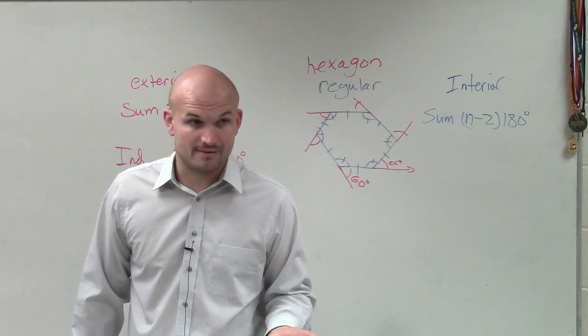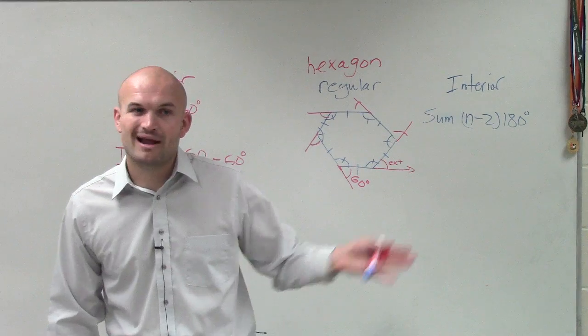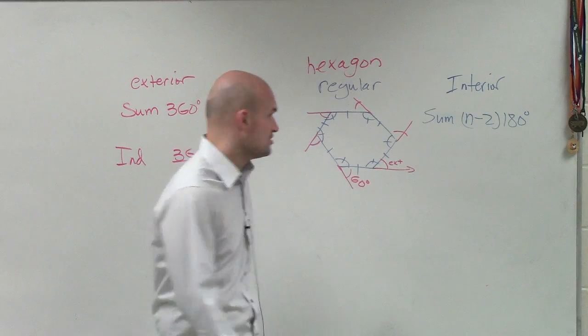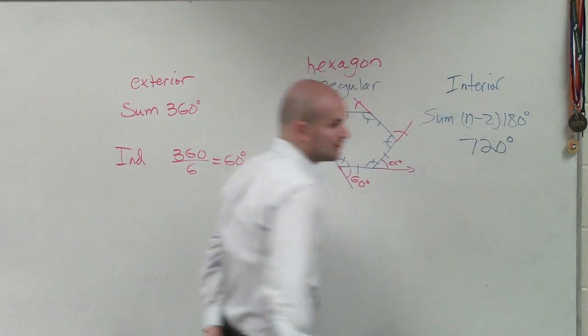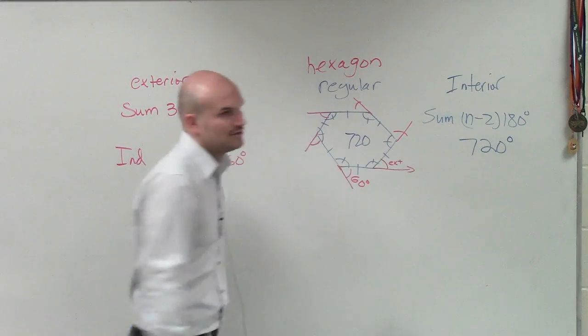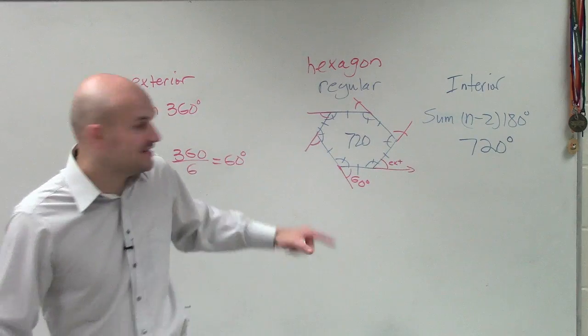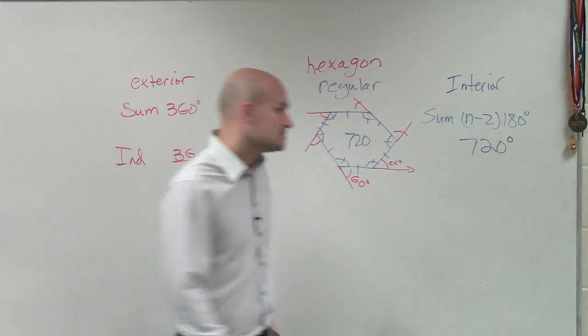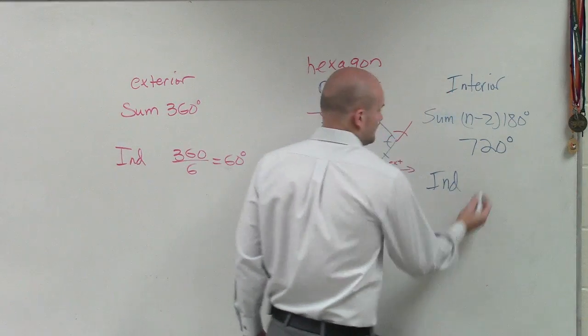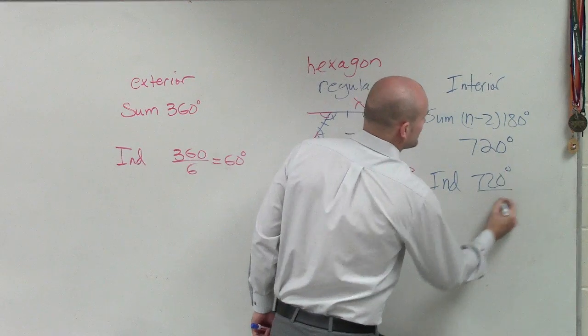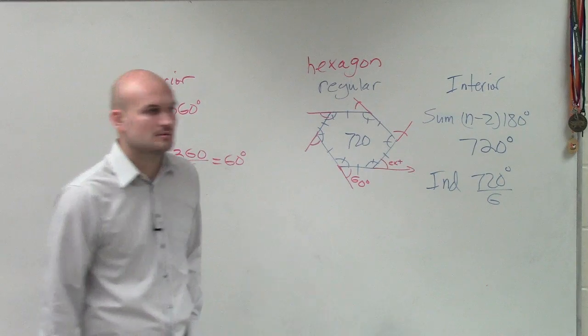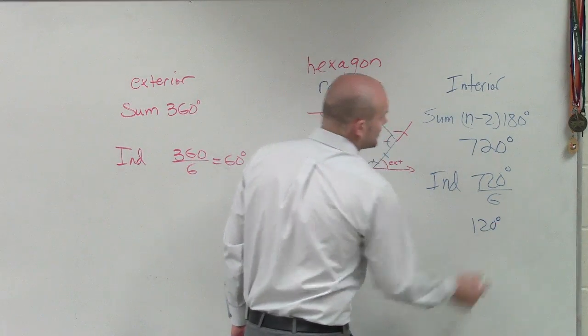So remember, n represents the number of sides, which is 6. 6 minus 2 is 4. 4 times 180 is going to be what? 720 degrees. But 720 degrees is the sum of all those blue angles. Right? But it's evenly divided between how many? 6. So if I want to find the individual, take 720 divided by 6, and you're going to get 120 degrees.